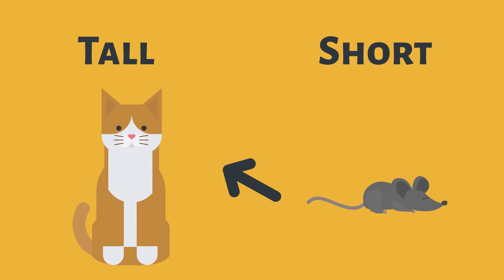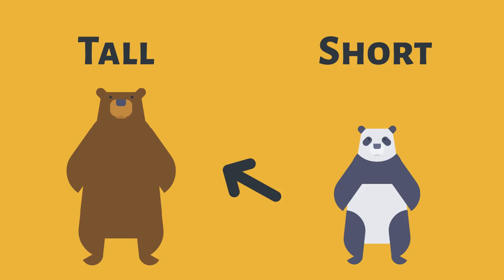The cat is tall, but the mouse is short. The brown bear is tall, but the white and black bear — the panda — is short.